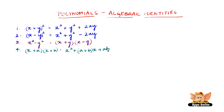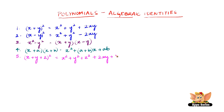Identity 5 is (x + y + z) whole squared equals x squared plus y squared plus z squared plus 2xy plus 2yz plus 2zx. It is cyclic here: 2xy, then y and the next alphabet z, then z and the next alphabet x.